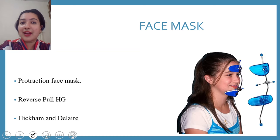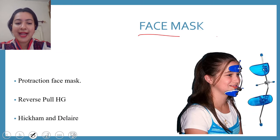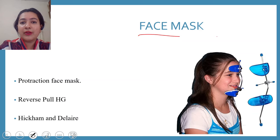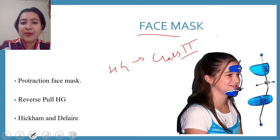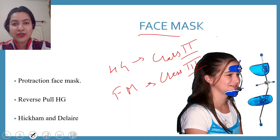Without wasting any time, let us start with the concept of face mask. We have read the basics of orthopedic appliances, and that is something which we applied in the headgear. Now, face mask is used in class 3 cases, whereas headgear was for class 2 cases. In the previous video we have seen the features of a class 3 patient.